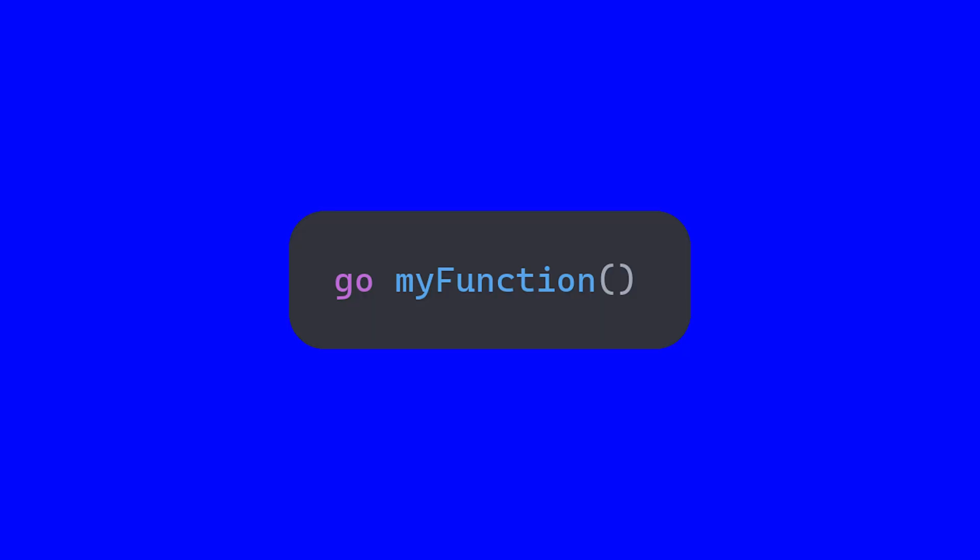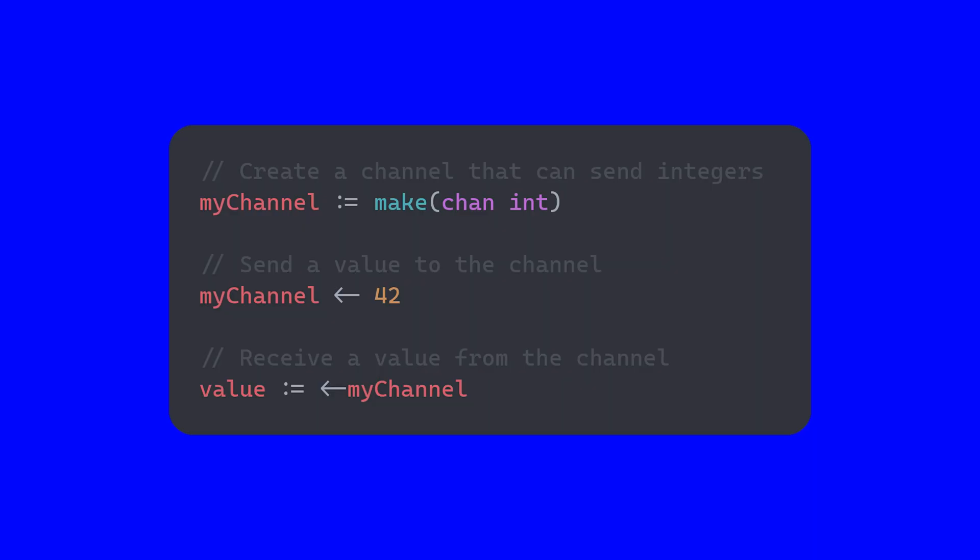You launch a Go routine by simply adding the Go keyword before a function call like this. This starts my function running in a new Go routine. The main function continues executing without waiting for my function to finish. Channels are typed conduits you use to communicate and synchronize concurrent Go routines. They allow you to send and receive values of a specific type. Just remember that Go routines are the workers, and channels are the communication pathway that allow them to work together efficiently and safely.